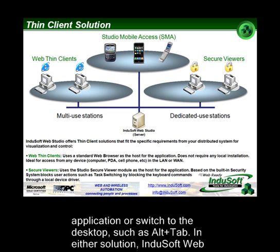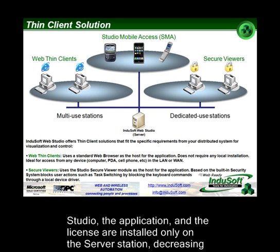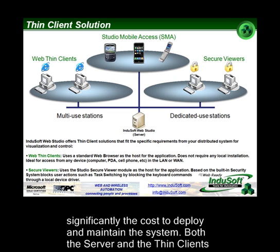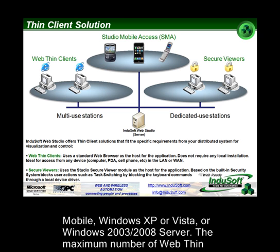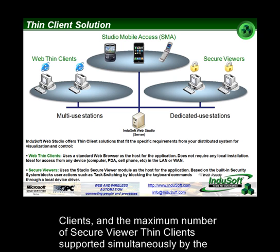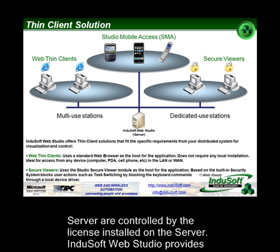In either solution, the application and the license are installed only on the server station, decreasing significantly the cost to deploy and maintain the system. Both the server and the thin clients can run on any operating system currently supported by Microsoft, including Windows Mobile, Windows XP or Vista, or Windows 2003 or 2008 server. The maximum number of web thin clients and secure viewer thin clients supported simultaneously by the server are controlled by the license installed on the server.